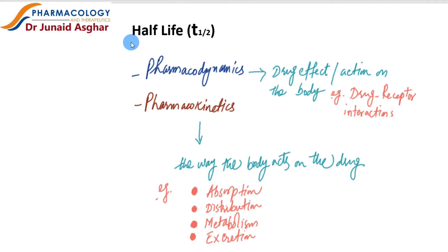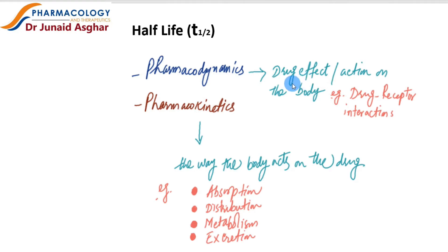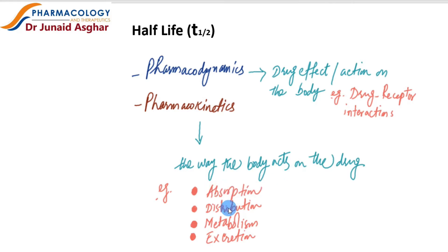Today's topic is the half-life of a drug. As you know, there are two main areas of study in pharmacology: pharmacodynamics and pharmacokinetics. Pharmacodynamics represents the area in which we study how drugs affect our body — the actions of the drug in the body — for example, drug-receptor interactions. Pharmacokinetics represents the way the body acts on a drug, including absorption, distribution, metabolism, and excretion.